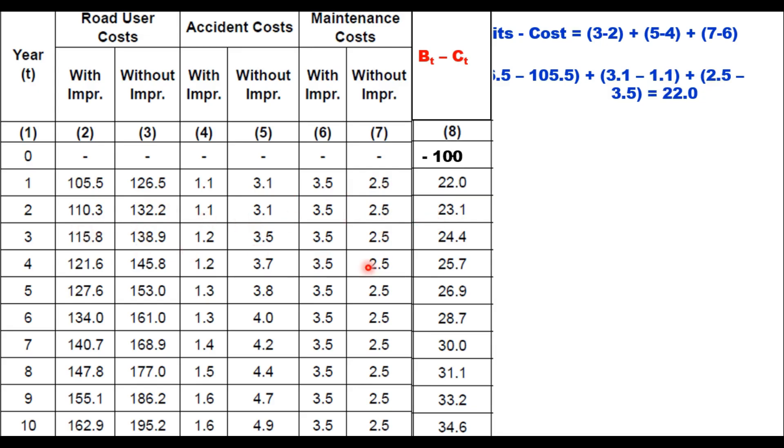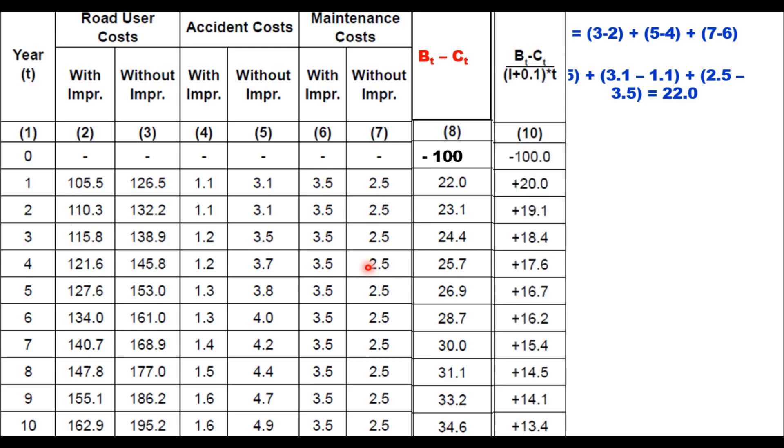Let me add one more column here. Now this is what we call the NPV: B minus C for tth year upon 1 plus i to the power t. Now here i is given 10% and therefore this is 0.1. So this value will be calculated like this. Let me take these two columns separately now.